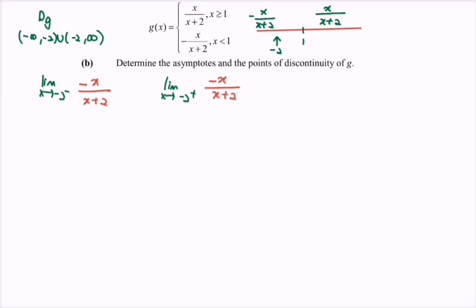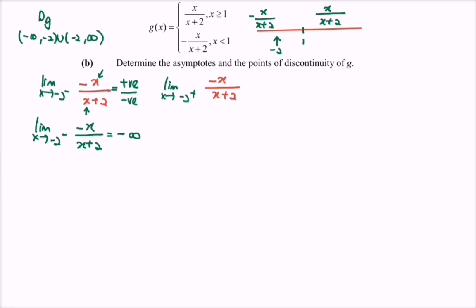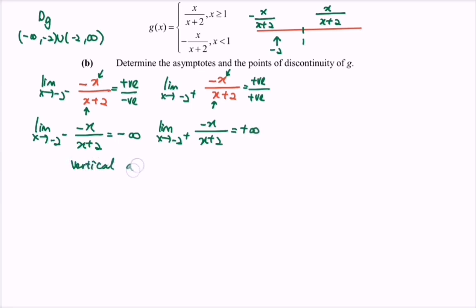Substituting a value approaching negative 2 from the left, for example negative 2.0001: the numerator gives a positive value and the denominator gives a very small negative value, so the limit is negative infinity. Approaching from the right, for example negative 1.999: both numerator and denominator are positive, giving positive infinity. Therefore, the vertical asymptote is x equals negative 2.